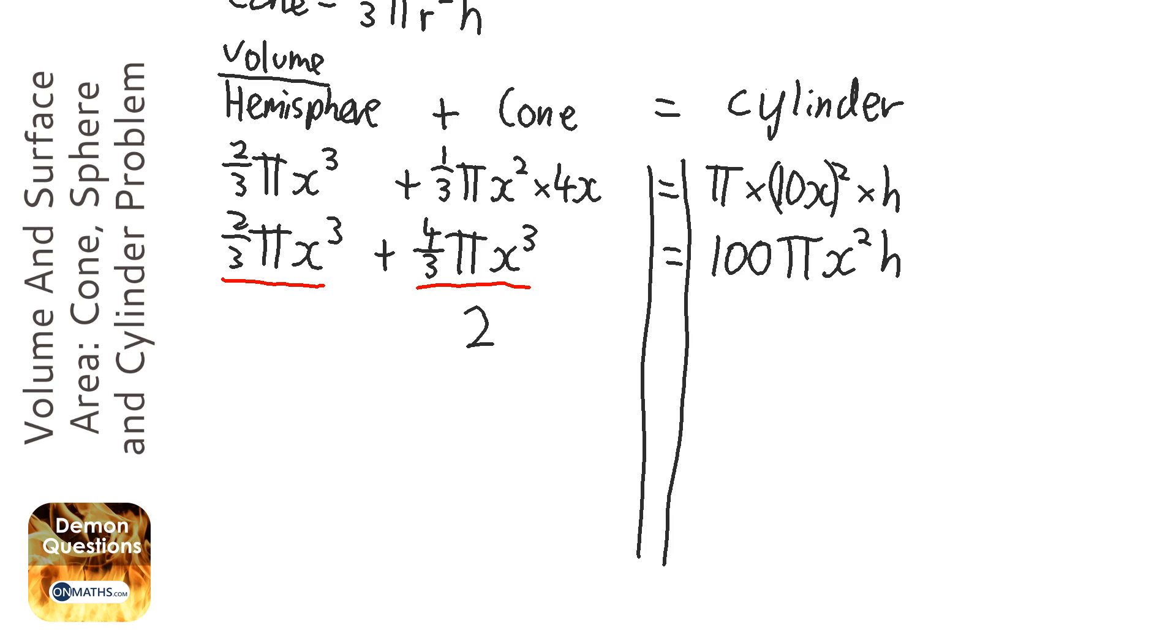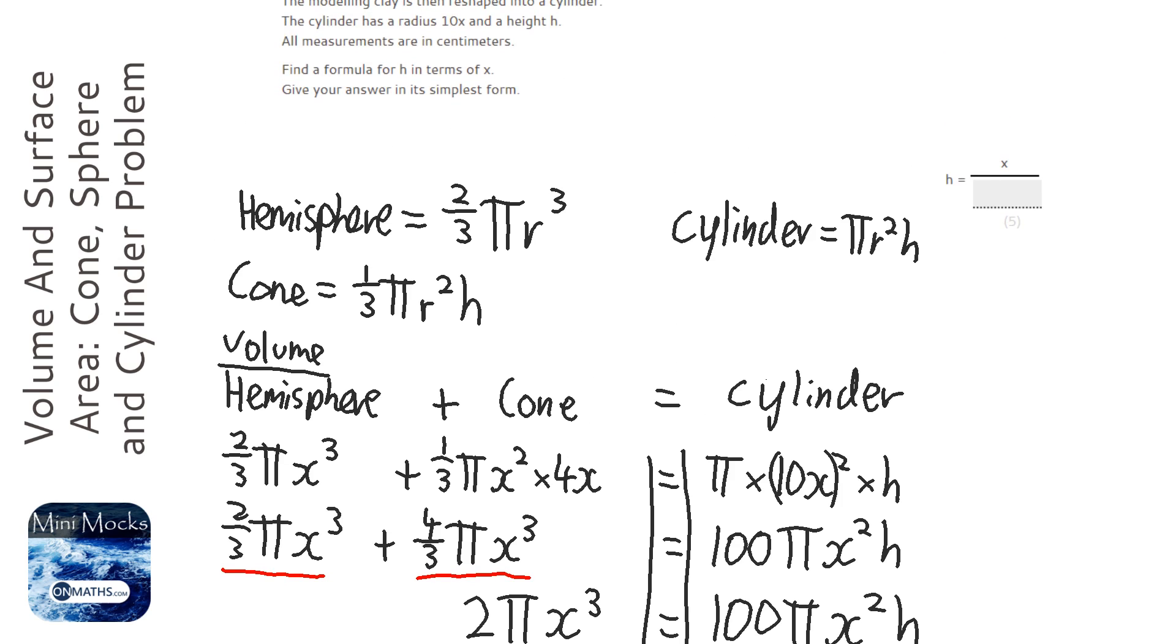So it's going to be 2 pi x cubed equals 100 pi x squared h. Brilliant. Okay, now let's just check to see what it wants. It wants a formula of h in terms of x, so we want h equals.